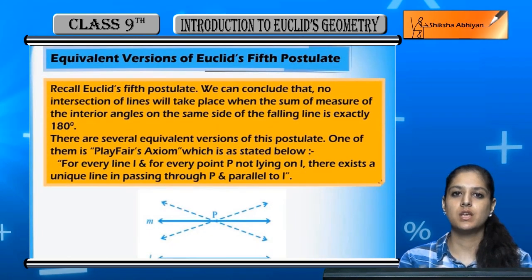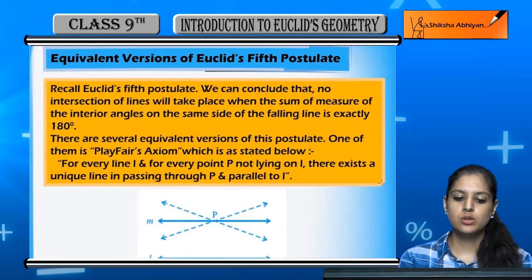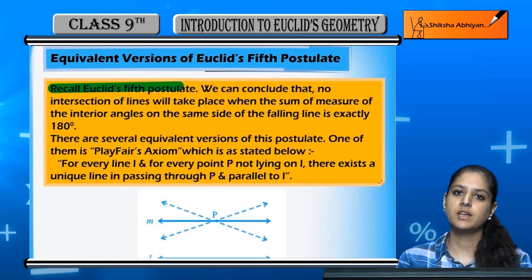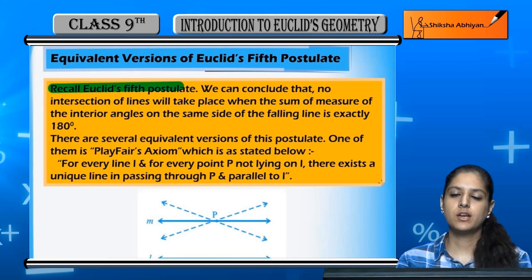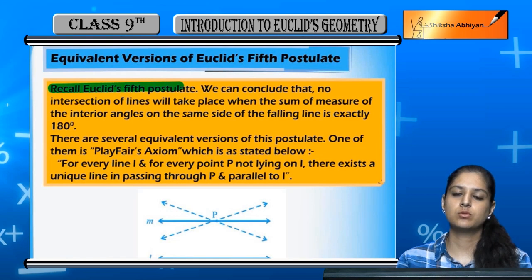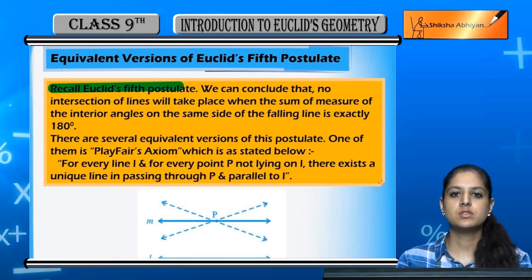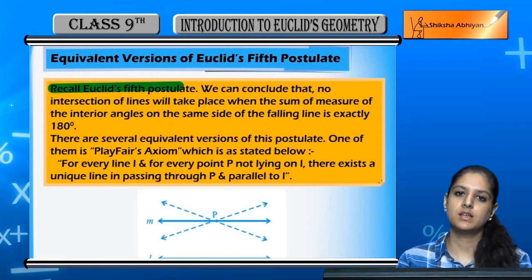So for that, recall Euclid's fifth postulate. The fifth postulate was: if two straight lines and another straight line falls on them, the interior angles on the same side, if we look at the sum, it is less than 180 degrees.